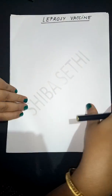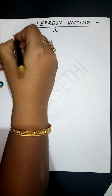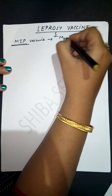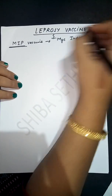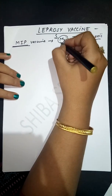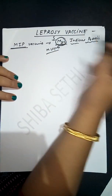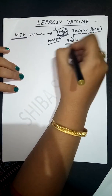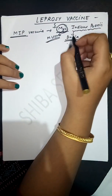Some important points related to leprosy vaccine: first of all, the leprosy vaccine comes by the name MIP vaccine. MIP stands for Mycobacterium Indicus Prani. Leprosy is caused by Mycobacterium leprae, which is acid-fast, so the word 'Mycobacterium' has been used. The word 'Indicus' has been added because of India.